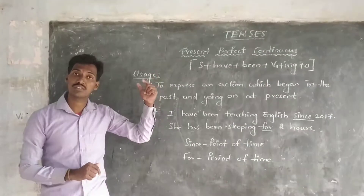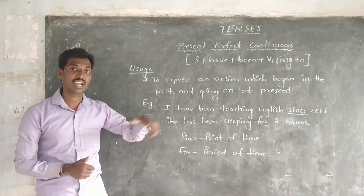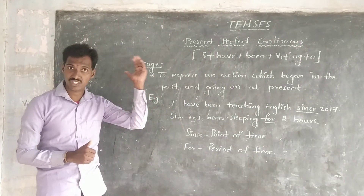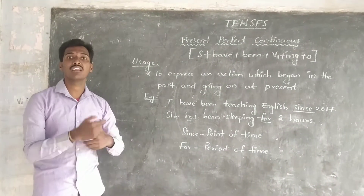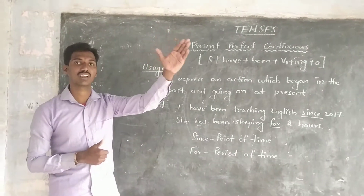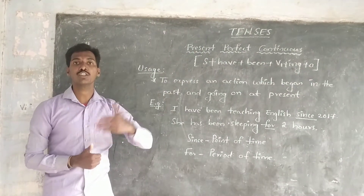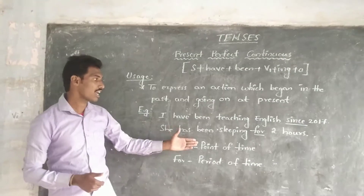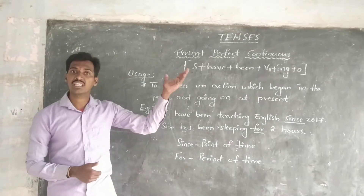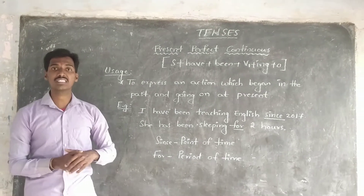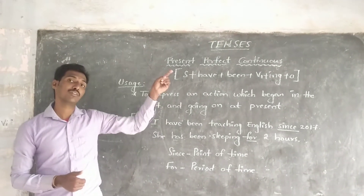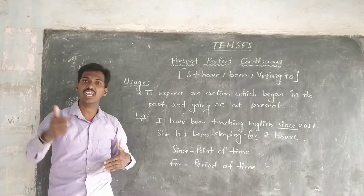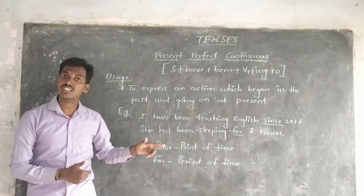Example one: 'I have been teaching English since 2017.' That means I started teaching in 2017 and I am still continuing my profession to teach English. Example two: 'She has been sleeping for 2 hours.' That means she started to sleep 2 hours ago and she is still sleeping.